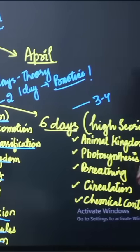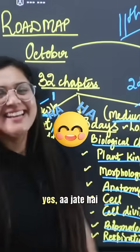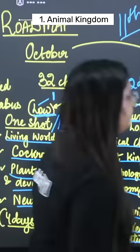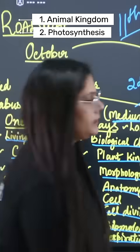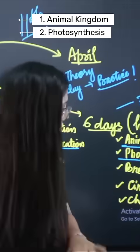Then there are high-scoring chapters where you have to expect three to four questions. Yes, they come. That's why I took Animal Kingdom from top. Then we have Photosynthesis - this is a very important chapter. Now there are many questions from this chapter, a lot of questions.